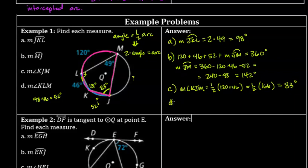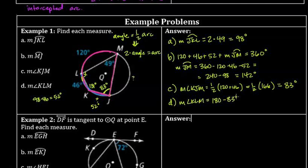To find the last answer, angle KLM, I could look at the arc it intercepts, or I can use the fact that it must be supplementary to angle KJM since they are opposite angles in an inscribed quadrilateral. So the measure of angle KLM = 180 − 83 = 97 degrees.